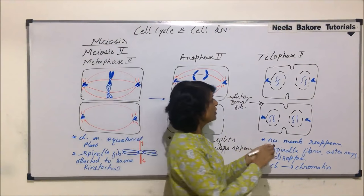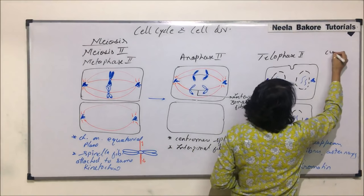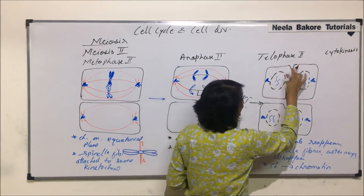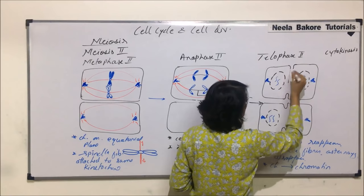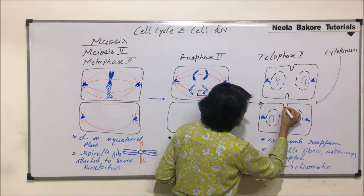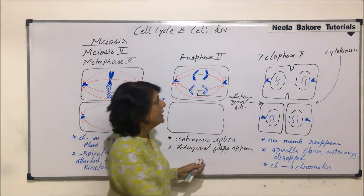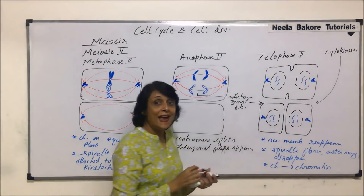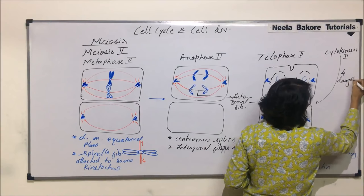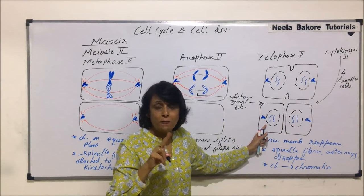If we add the same changes for telophase 2, and if I show cytokinesis also, then this constriction is going to get deeper. Let me show telophase 2 in one cell and cytokinesis in this cell. This constriction is going to get deeper and the two cells would get separated. Same thing would happen here. So at the end of cytokinesis 2, we would get four daughter cells.